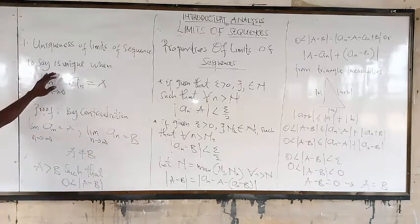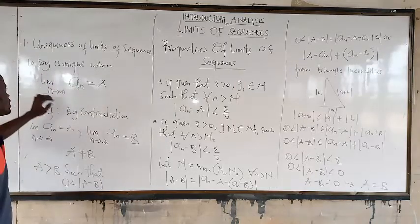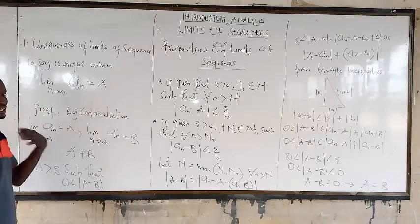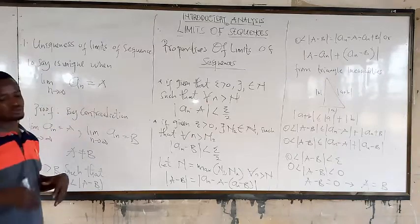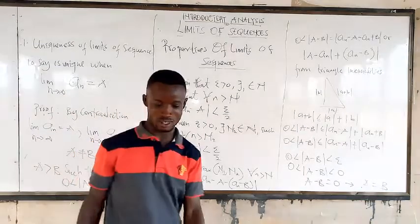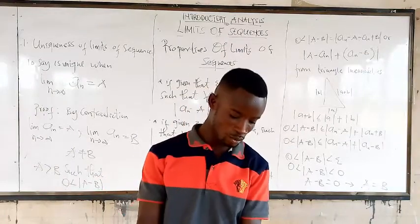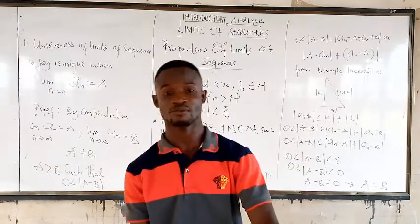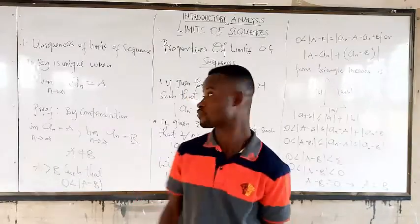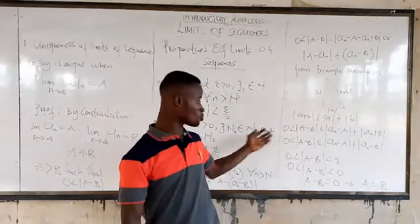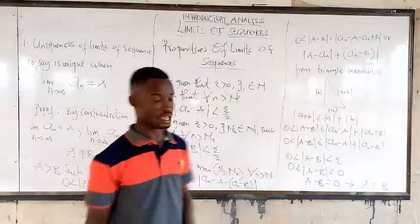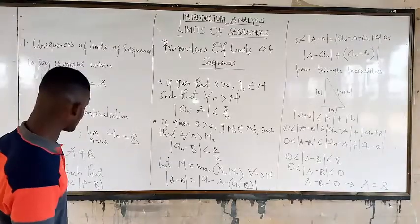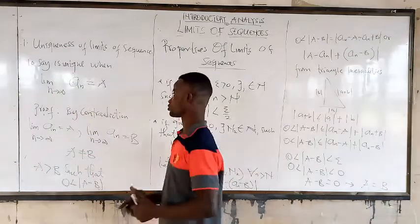Now, to say it is unique — when the limit of A of N is equal to A — doesn't mean that it is unique. It needs to be proved. Even though what you are saying is true, it still needs to be proved. So that is the whole proof, and there is a small part to the other side. Make sure you write it well.